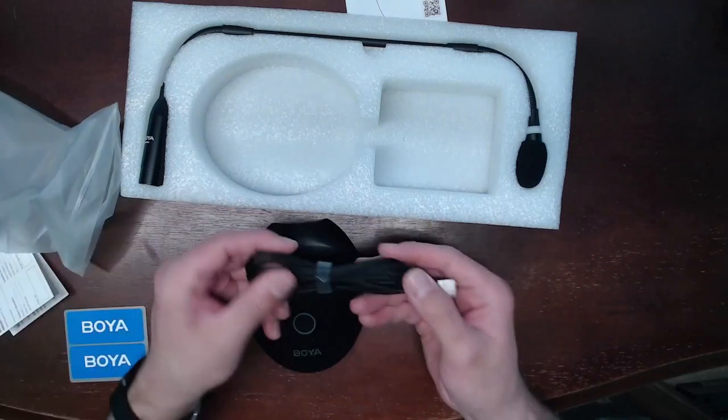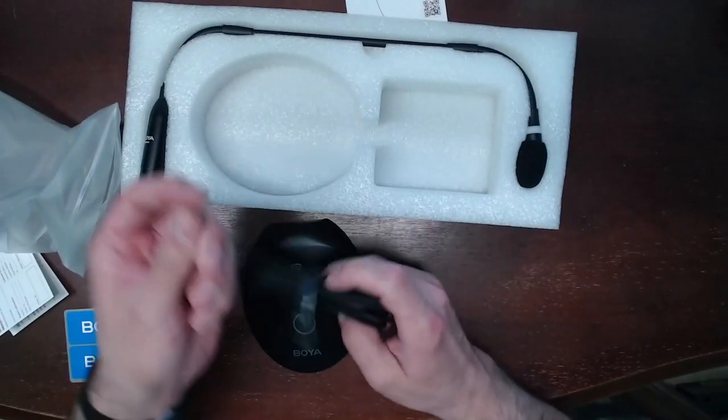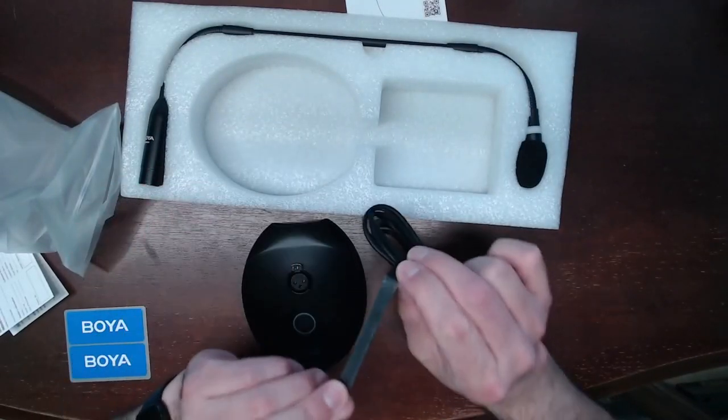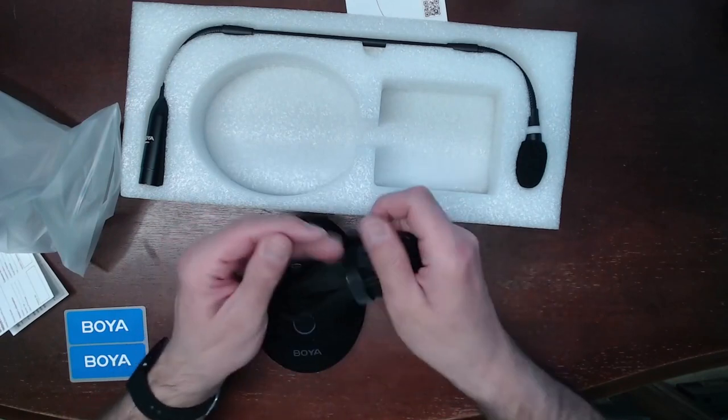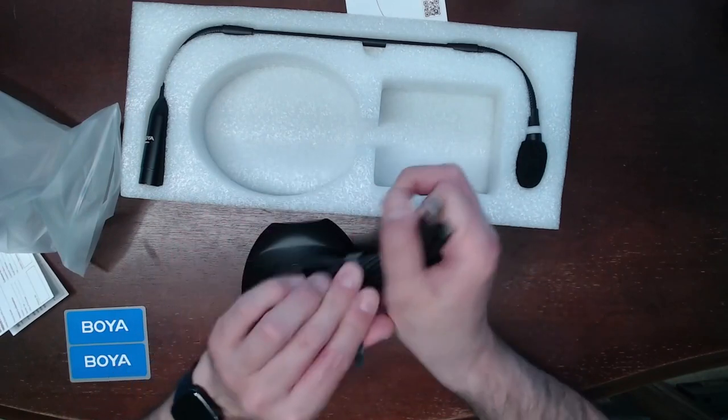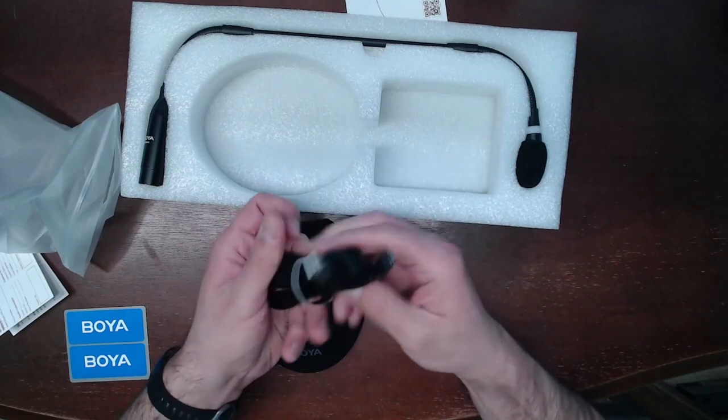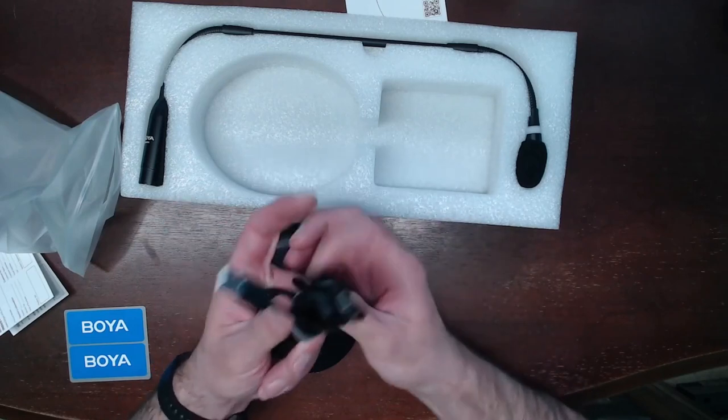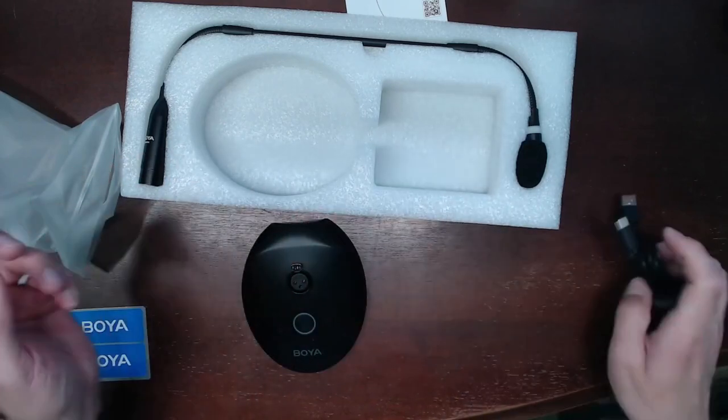The USB-C cable comes with one of my favorite things, the Velcro attached to the cable, which makes it a lot easier to manage if there's extra length there or when you want to store this away. It keeps that cable nice and organized.